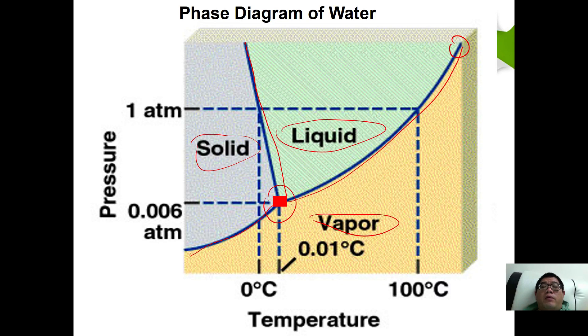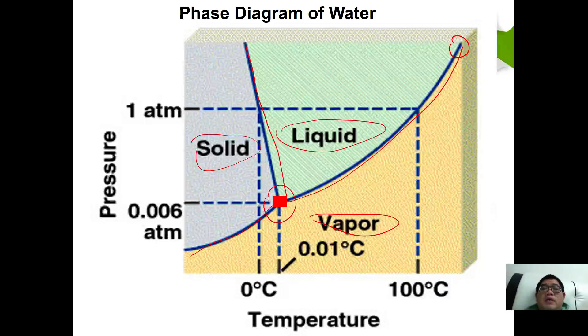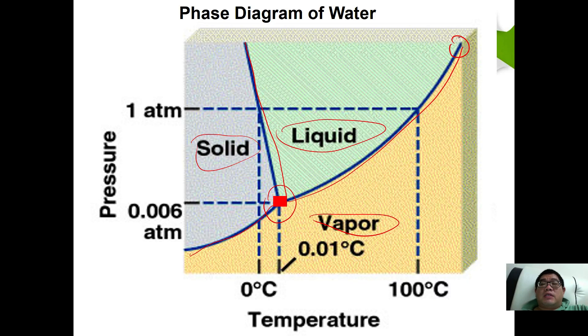The triple point for water occurs at 0.01 degrees Celsius and 0.06 atmosphere, while the critical point exists at 374 degrees Celsius and 218 atmospheres.